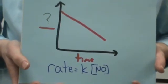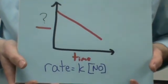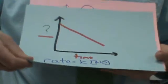Goes on the axis. It would be natural log of the NO concentration.